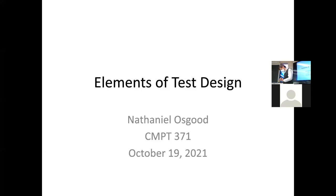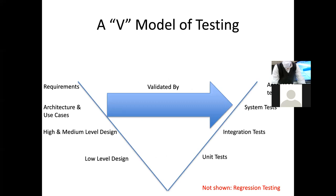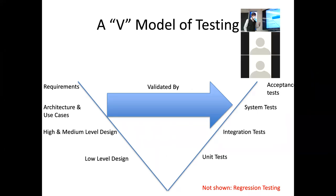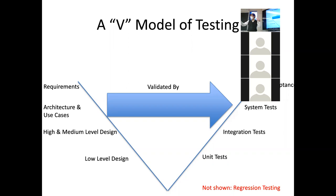We're going to be talking about tests designed to help us identify problems of various sorts. This is a good reminder that we have these different levels of planning for a system. We elicit the requirements, draw out the user's needs — often forcing them to think about things they've never really thought about. We build an architecture for the system, maybe a model-view-controller system, maybe architecture based on layers or tree-based decomposition. We have medium and high level design, and then low level design.